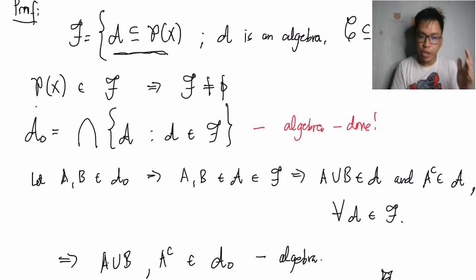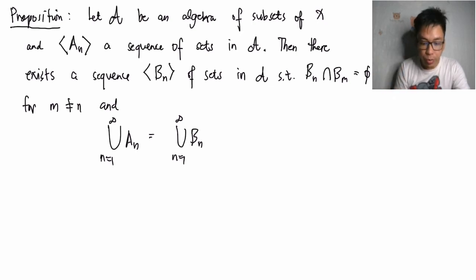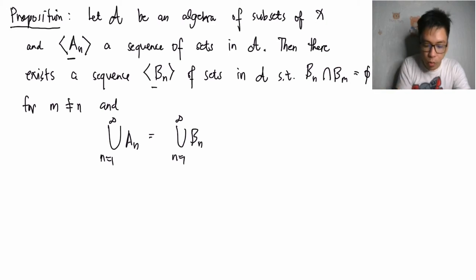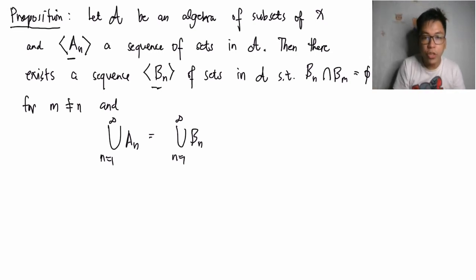For one final result in this video, given an algebra script A of subsets of X and a sequence of sets A_N in script A, there exists another sequence of sets B_N in script A such that B_M intersect B_N is empty for every M not equal to N, and the union of A_N from 1 to infinity equals the union of B_N from 1 to infinity.